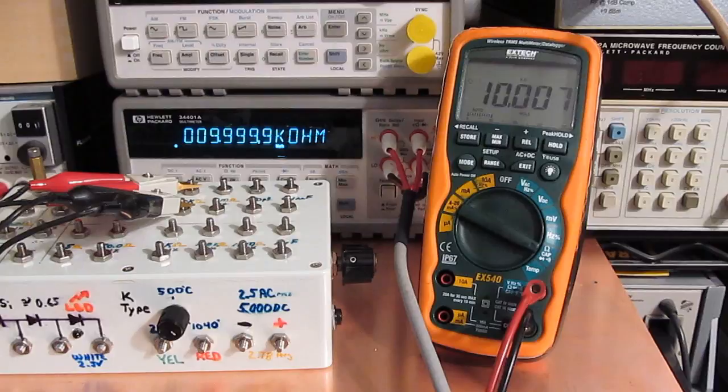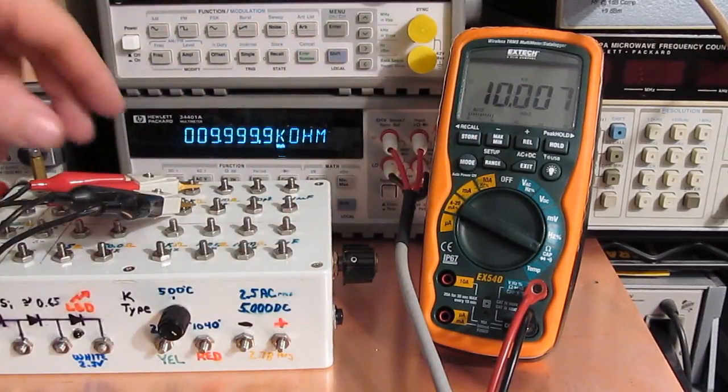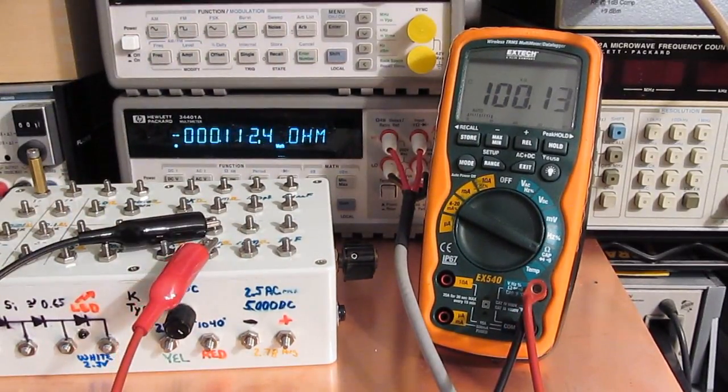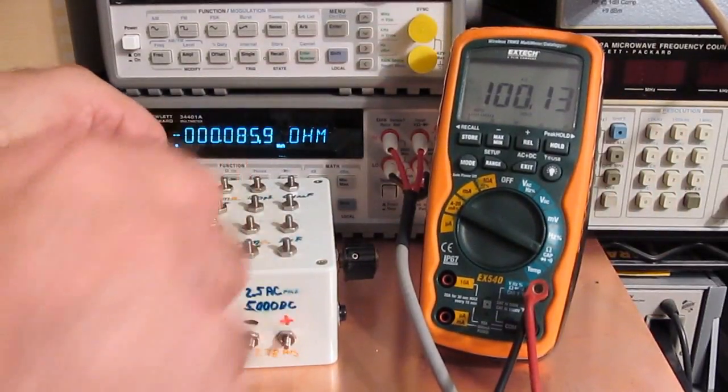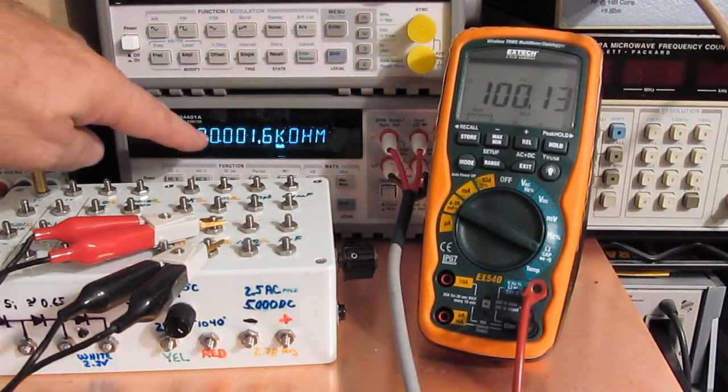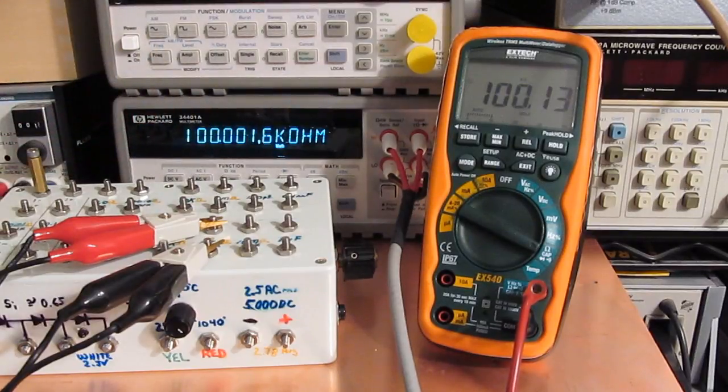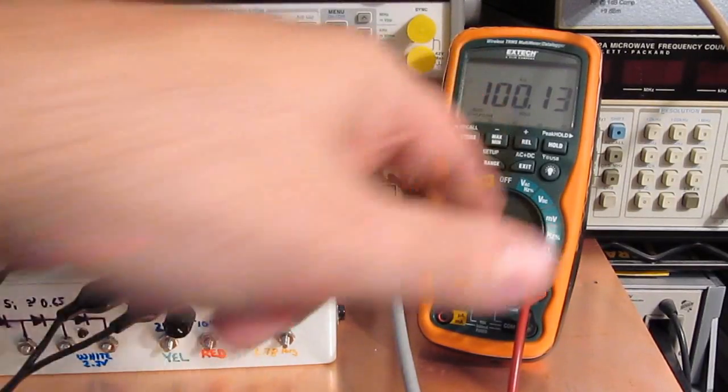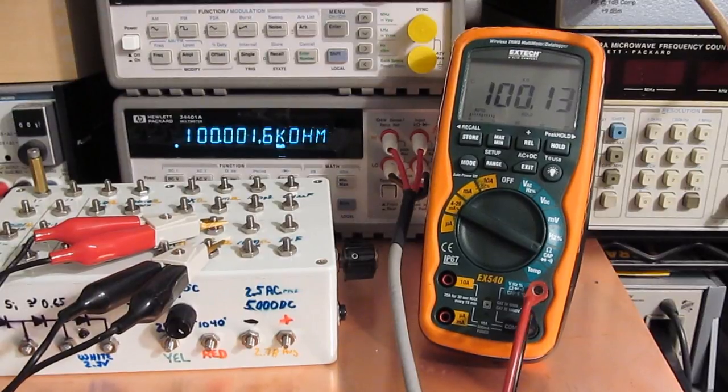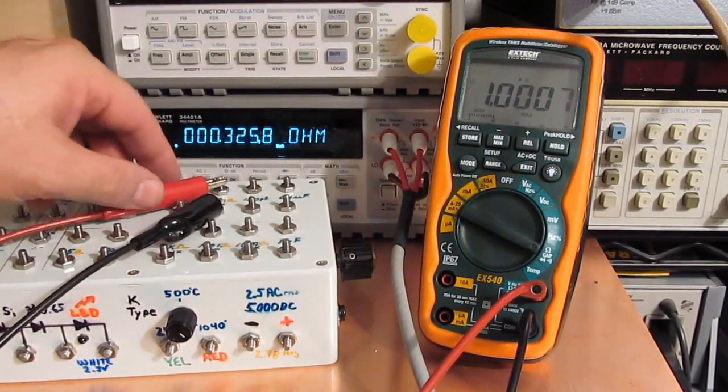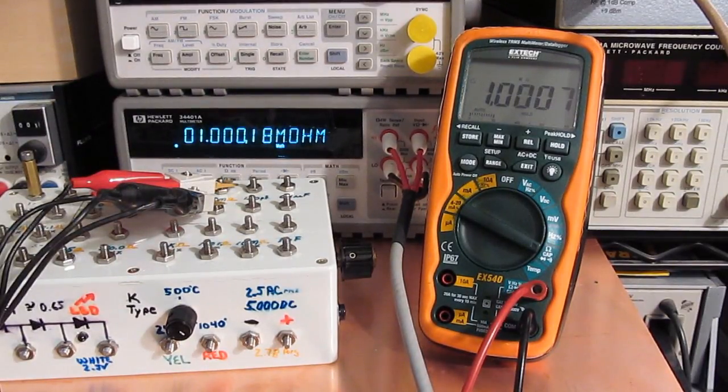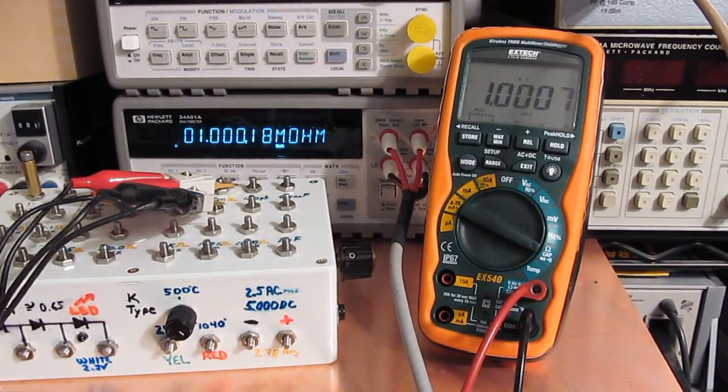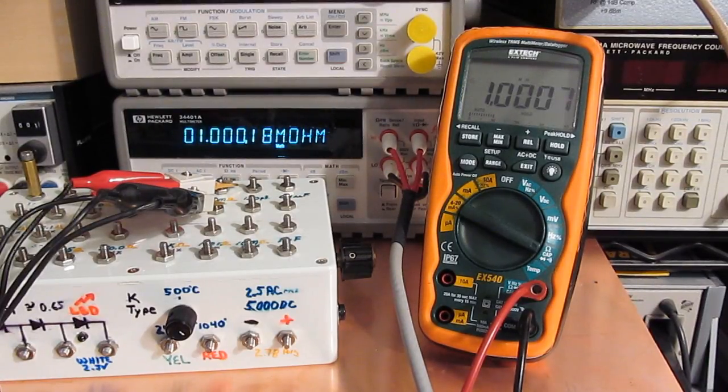Looks like the hundred k reads a little high, so it's 100.13 and again the HP is 100.0017, still fairly close. This is with a one megohm resistor. Let's see on our HP, it's 1.00018 meg versus 1.0007 on the XTAC, still pretty good.